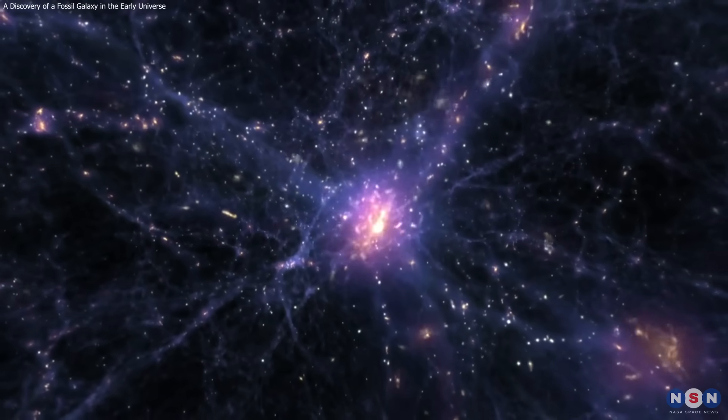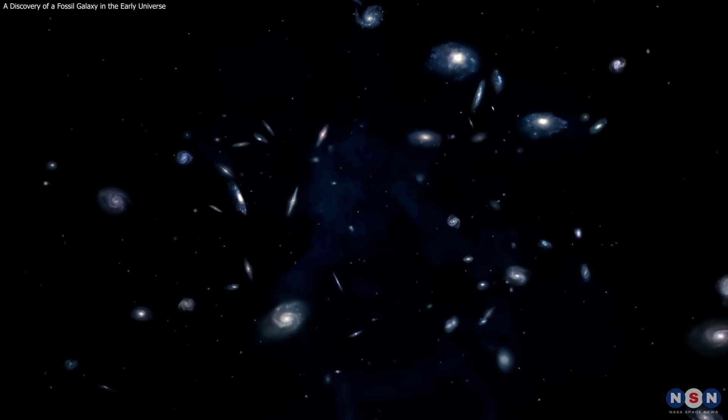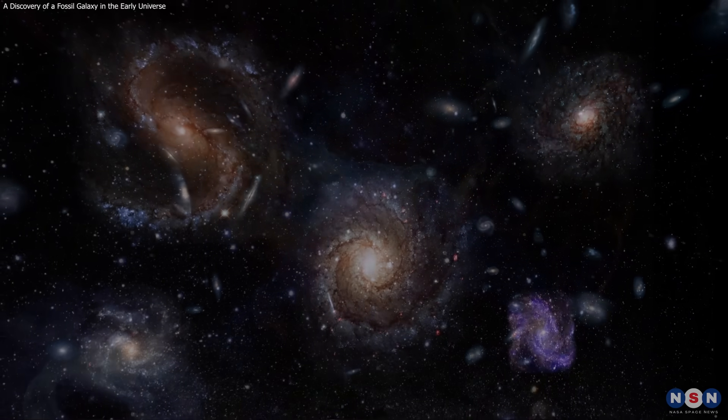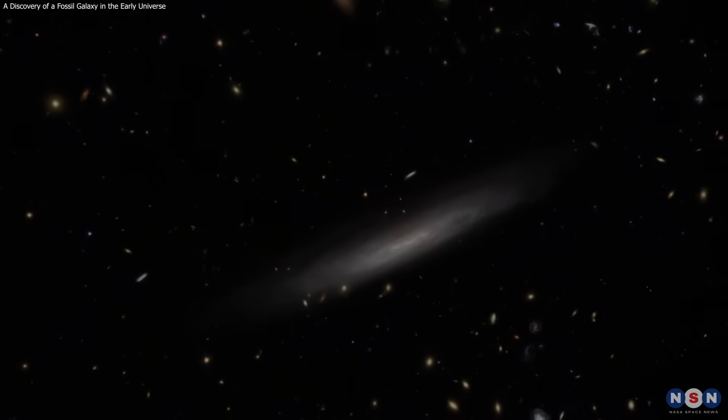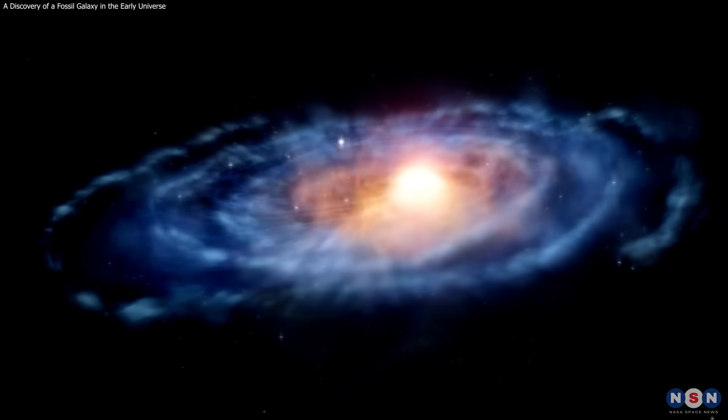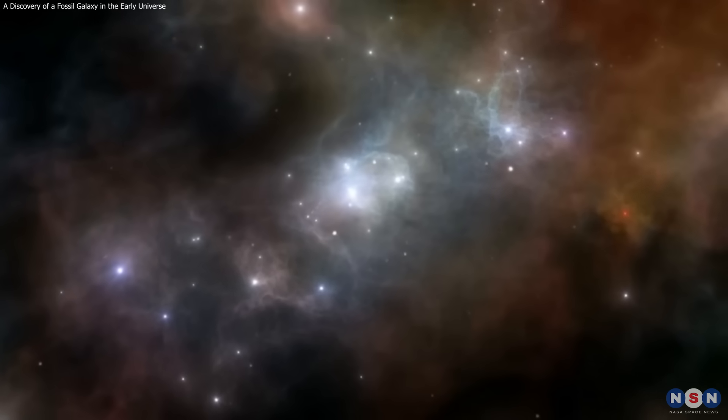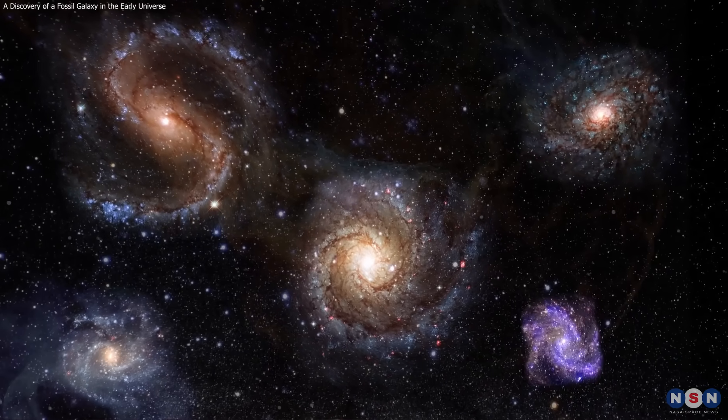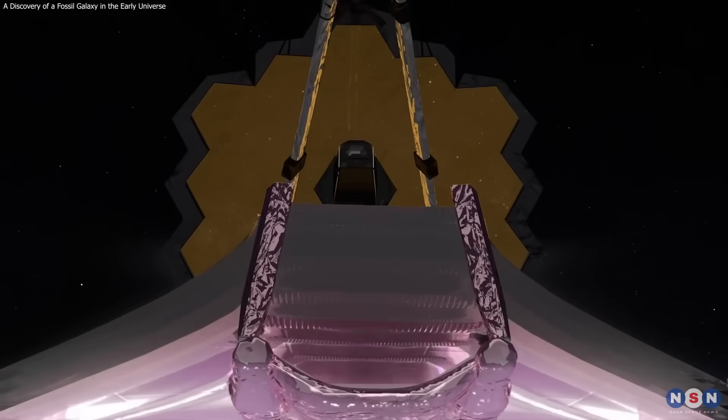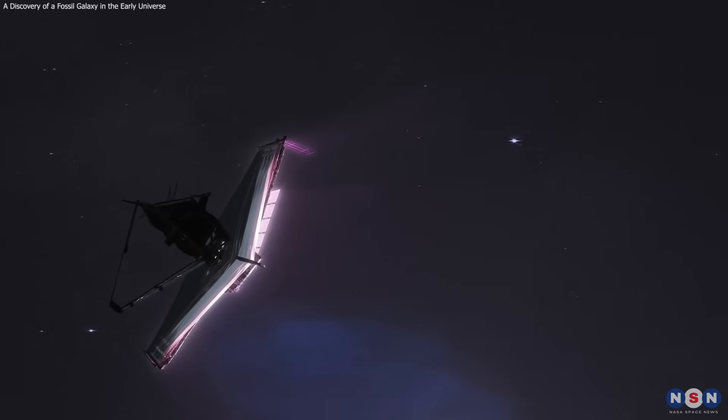This discovery is not only stunning to look at, but also has profound implications for our understanding of galaxy evolution and cosmology. It shows us how diverse and extreme the galaxies in the early universe were, and how they evolved into the galaxies we see today. It also raises many questions, such as how did this galaxy form and quench its star formation so quickly and efficiently? What are the physical mechanisms that regulate star formation and the feedback processes in these galaxies? And how common and representative are these galaxies in the early universe? These are some of the questions that Webb will try to answer in the future as it continues to explore the distant and ancient universe with its unparalleled resolution and sensitivity.